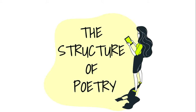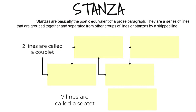We've mentioned already that though poetry's origins lie in the spoken word, it does take a very recognizable shape when put down on the page. This is largely due to the overall organization of the lines on the page, often in the form of stanzas. Stanzas are basically the poetic equivalent of a prose paragraph. They are a series of lines that are grouped together and separated from other groups of lines or stanzas by a skipped line. Stanzas come in a variety of lengths dependent either on the whim of a poet or the conventions of a particular poetic form.